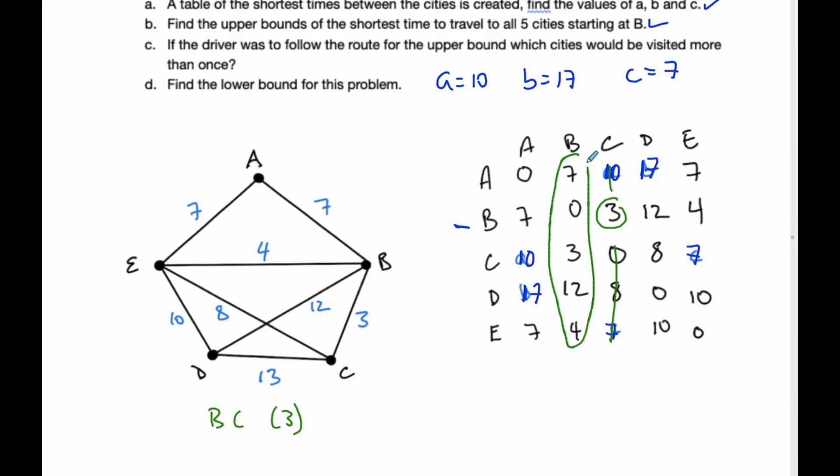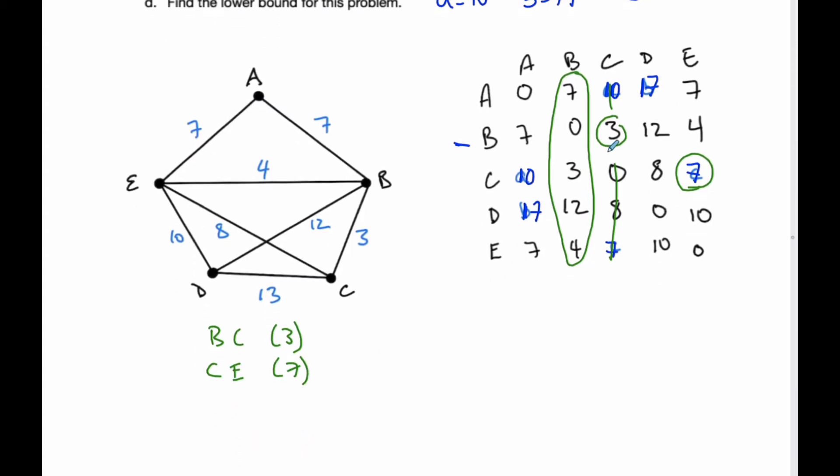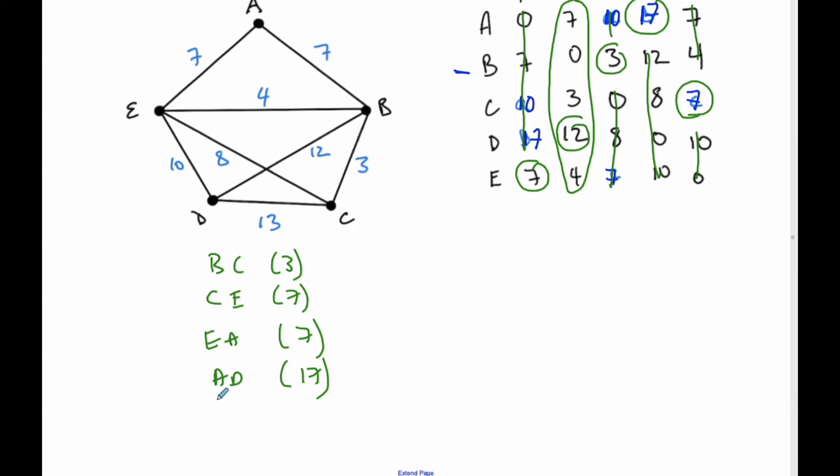Now I'm at C. I choose the smallest one, which is E. C to E is 7. Now I'm sitting on E. My next one is A. E to A is also 7. I'm sitting on A, so I'm going to go to D - it's the only option left. A to D is 17. Finally, I go back. I'm at D, I have to go to B. D to B is 12.